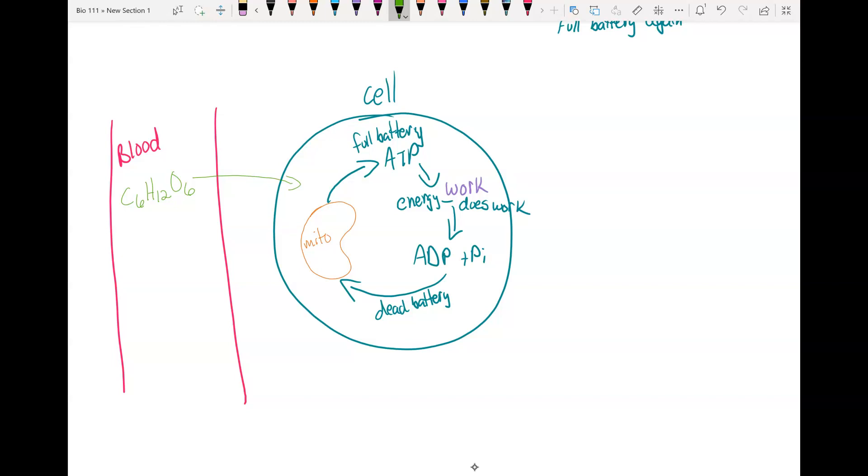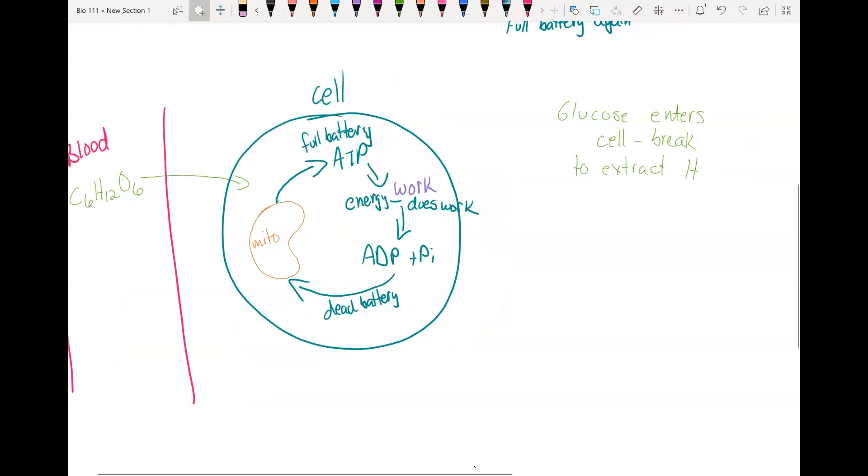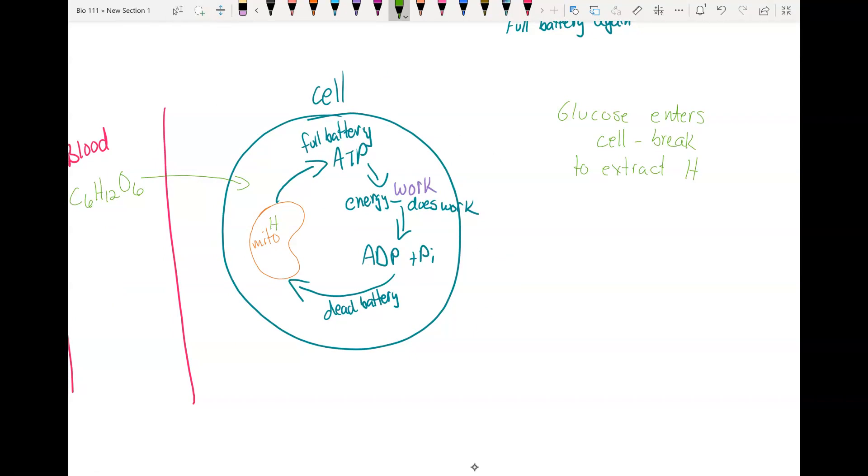The glucose comes into your cell. Once it's in there, you begin breaking it down. It has 12 hydrogens, and you're going to extract those hydrogens out. Those hydrogens are in your mitochondria, and you use them to reattach the P to the ADP. Your mitochondria uses the hydrogen to reattach the P to the ADP, and you get ATP.